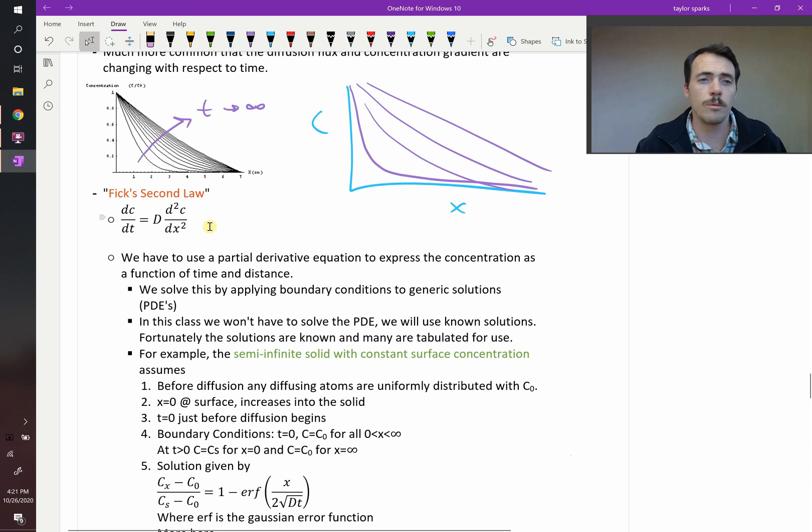This is a little bit nastier than the one we saw before. This is dc/dt, so it's how the concentration is changing with time, is equal to the diffusion coefficient, the same one that we used for Fick's first law, multiplied by the second derivative of the concentration with respect to position. So this is a partial derivative equation, a PDE. Therefore, in this class, since PDEs is not a prereq, we're not going to learn how to solve this analytically.